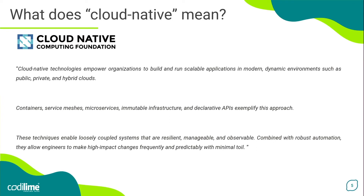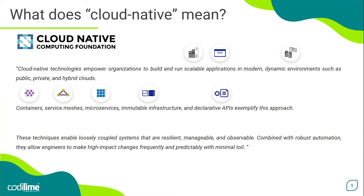Cloud native technologies empower organizations to build and run scalable applications in modern, dynamic environments such as public, private and hybrid clouds. Containers, service meshes, microservices, immutable infrastructure and declarative APIs exemplify this approach. These techniques enable loosely coupled systems that are resilient, manageable and observable. Combined with robust automation, they allow engineers to make high-impact changes frequently and predictably with minimal toil.